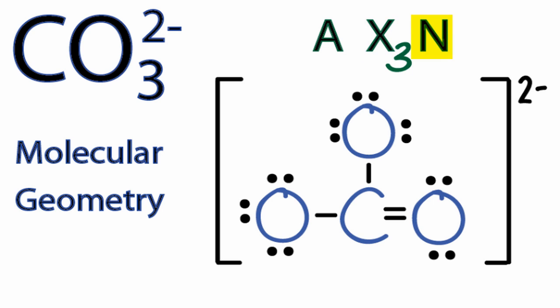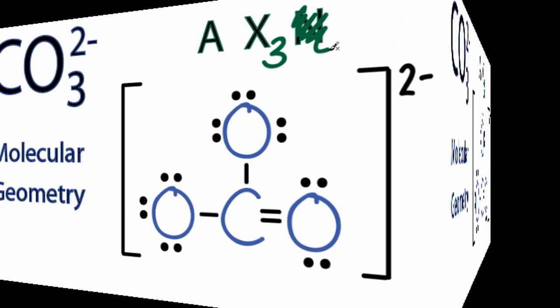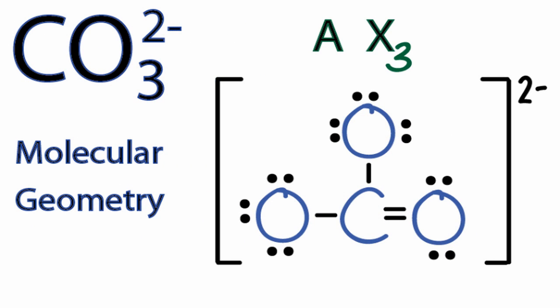And N, that's the number of non-bonding electron pairs. All of the electron pairs are involved in chemical bonds between the carbons and the oxygens. So we can just ignore N. So you could have memorized that AX3 is a trigonal planar molecular geometry.